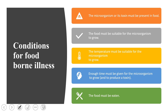The conditions for foodborne illness are: first, the food must contain microorganisms or toxins secreted by microorganisms. Second, the food must be a good medium for the growth of microorganisms, providing adequate nutrition. Foods with high amounts of spices, salt, or oil are less favorable for bacterial growth and therefore less likely to cause spoilage.